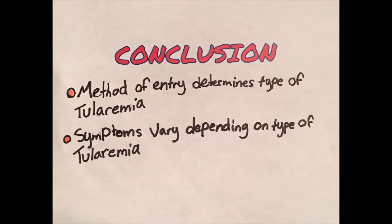In conclusion, Tularemia is a disease caused by a gram-negative bacteria with the coccobacilli morphology. The method of entry determines the type of Tularemia contracted, and symptoms vary depending on the type of Tularemia.